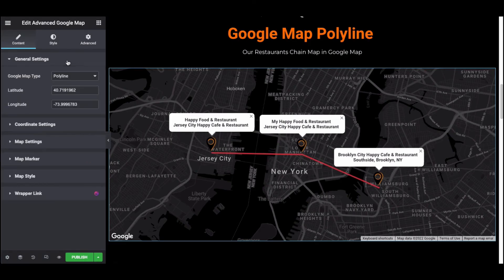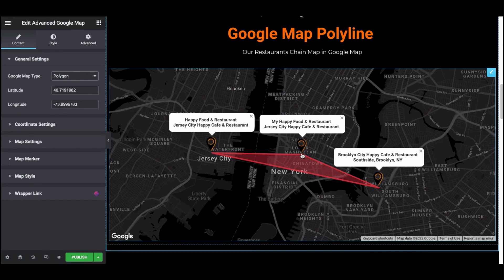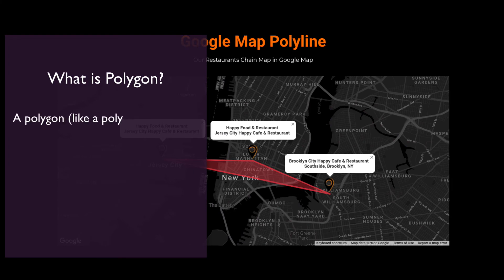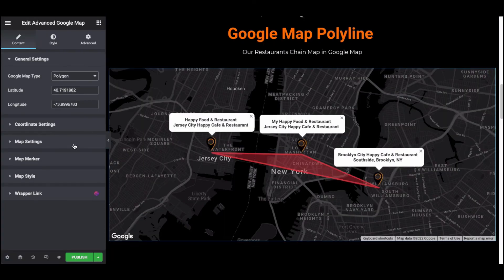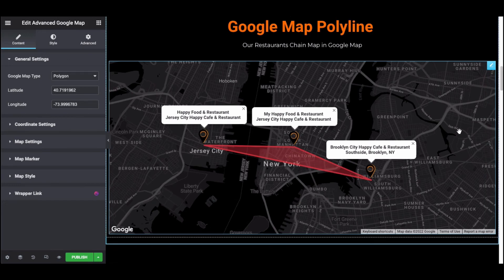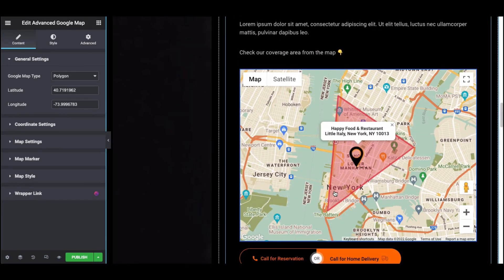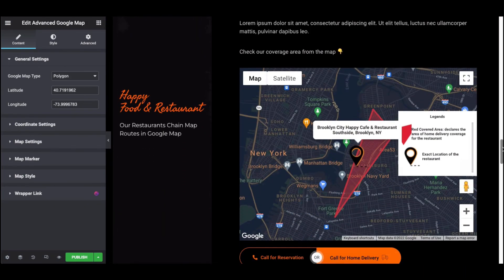Now let's see how to use other map types. Change the map type from Polyline to Polygon. You can see it automatically captures your preferred location and shows a polygon-type structure. A polygon defines a series of connected coordinates in an ordered sequence. Additionally, polygons form a closed loop and define a filled region. We used Polygon to show our restaurant's free home delivery service coverage area. You can also add different polygon styles for each location.